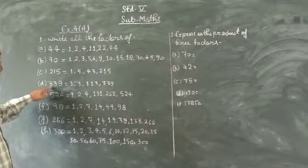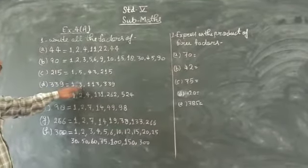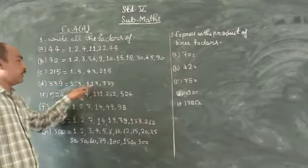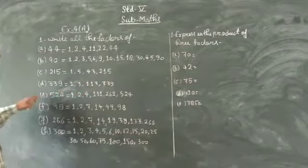Part number D, 339. The factors equal: 1, 3, 130, 339.